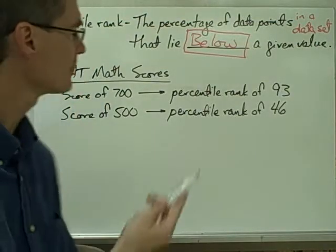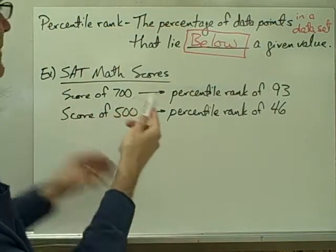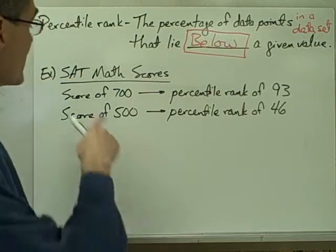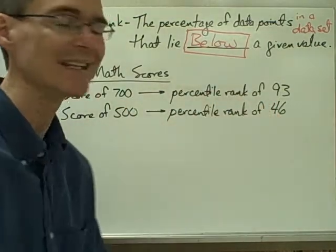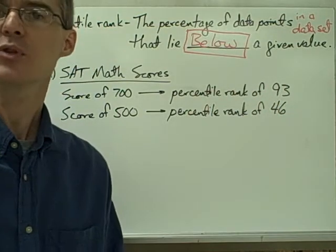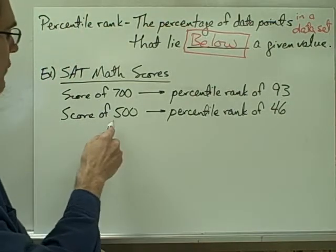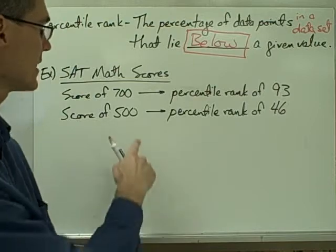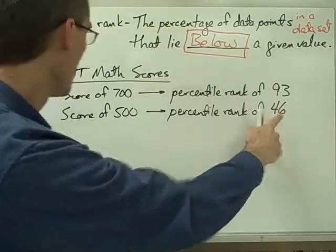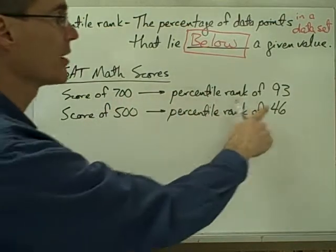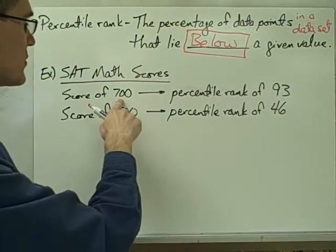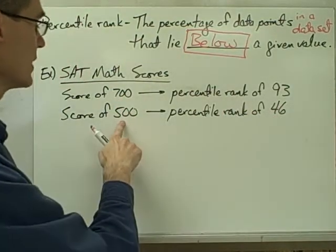For example, consider SAT math scores. In a particular year, if you got a score of 700 on the SAT math portion — the maximum score is 800 — your percentile rank would have been 93. That means you scored better than 93 percent of all the other test takers. If, however, you got a score of 500 on the SAT math test that year, your percentile rank would have been 46, which indicates you scored higher than only 46 percent of all the other test takers. Clearly, a score of 700 is better, as indicated by the higher percentile rank.